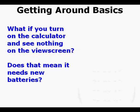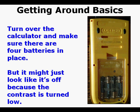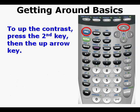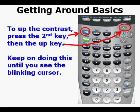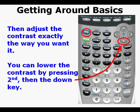You might turn on your calculator and see nothing on the view screen. Does that mean it needs new batteries? Turn on the calculator and be sure there are four batteries in place. If batteries are there, it might just look turned off because the contrast is set too low. To up the contrast, press the second key, then the up arrow key. Keep repeating the process until you see the blinking cursor, then continue until you have the contrast you want.